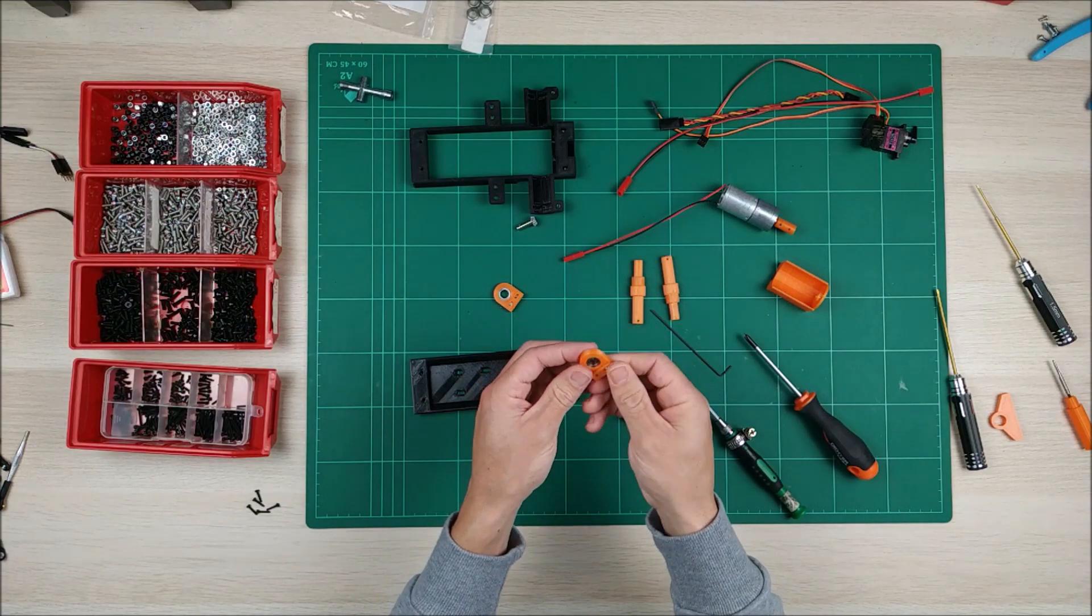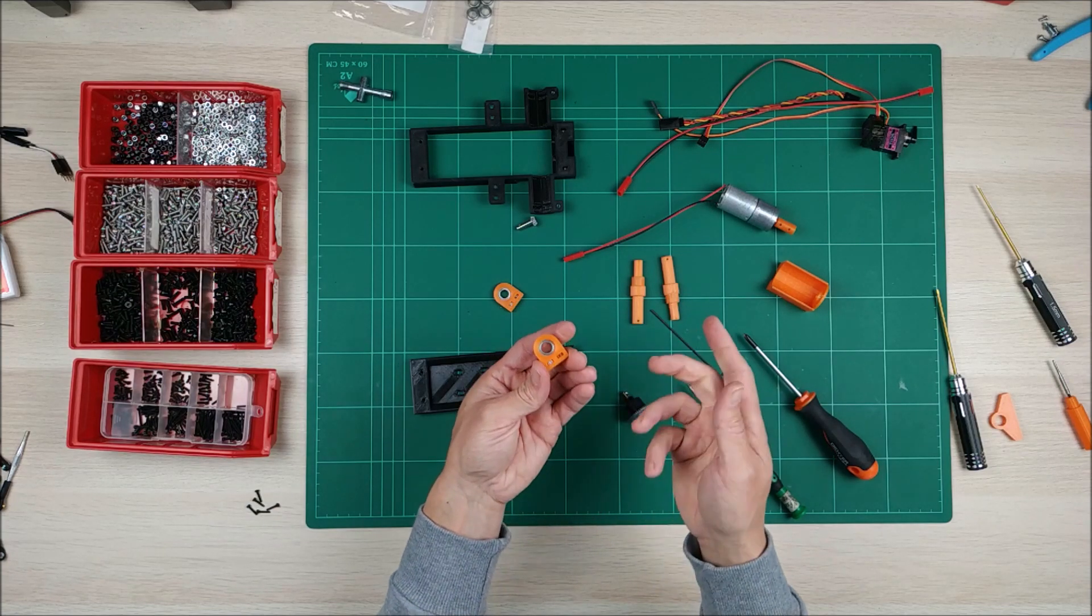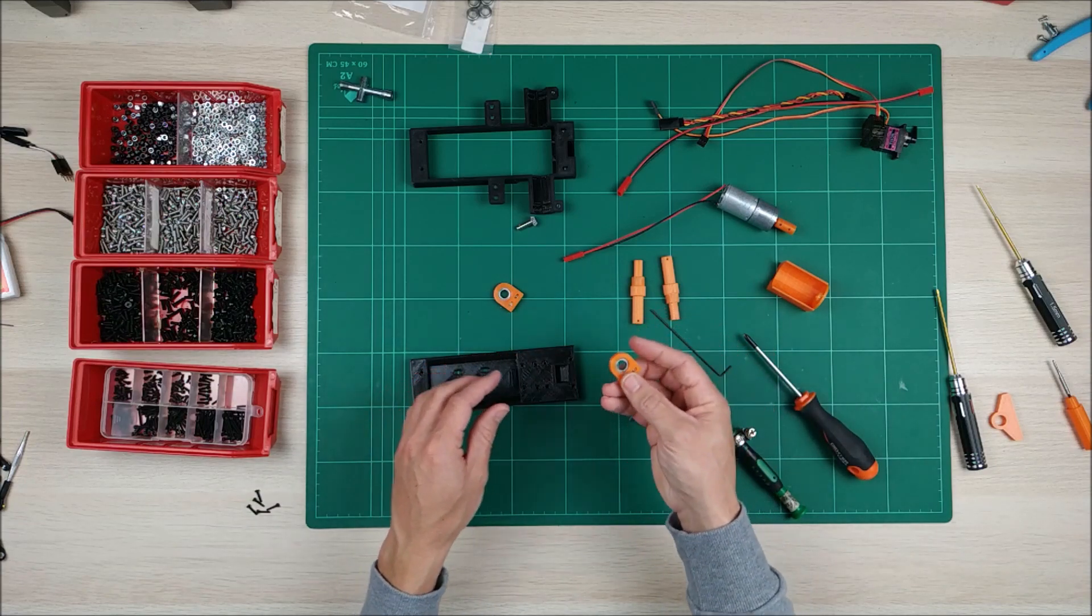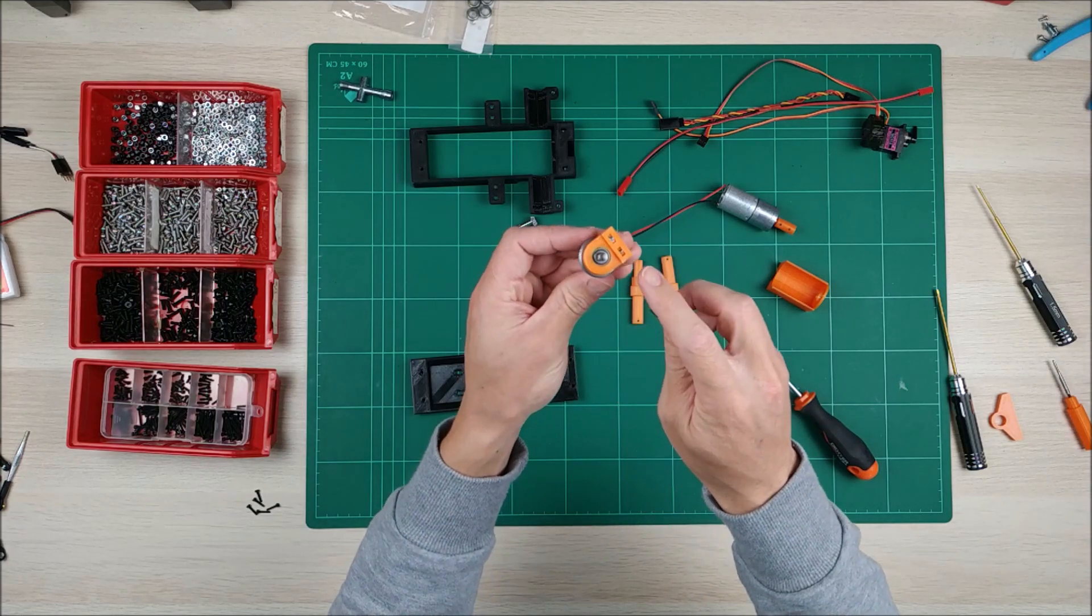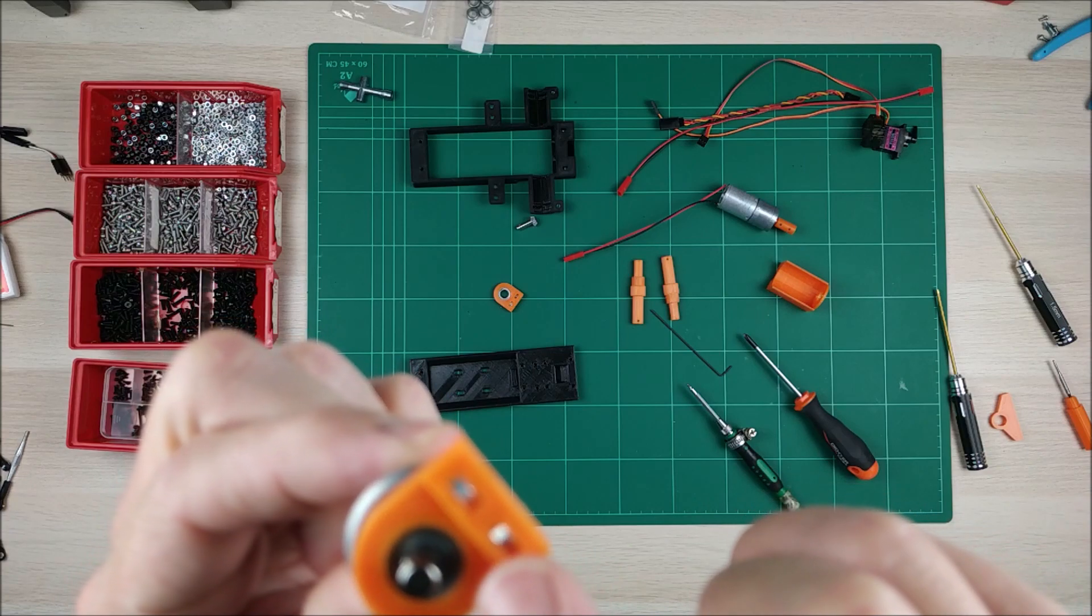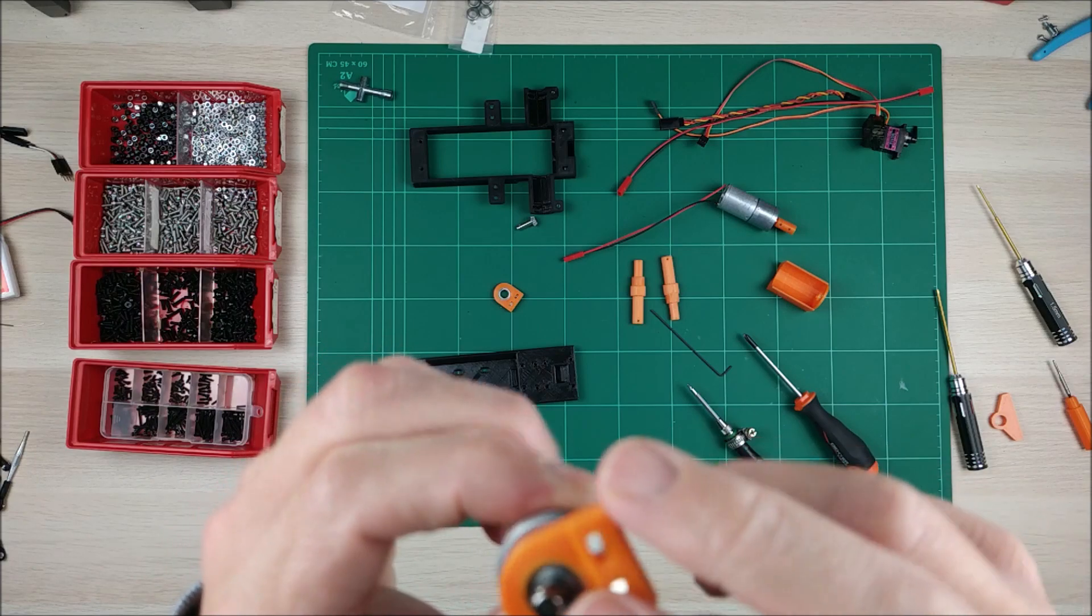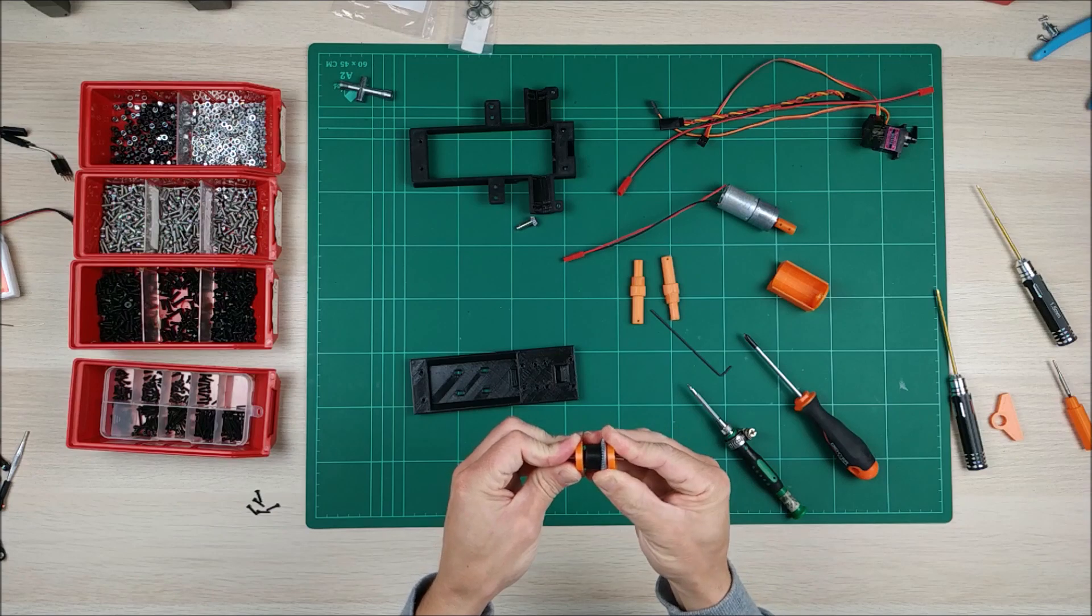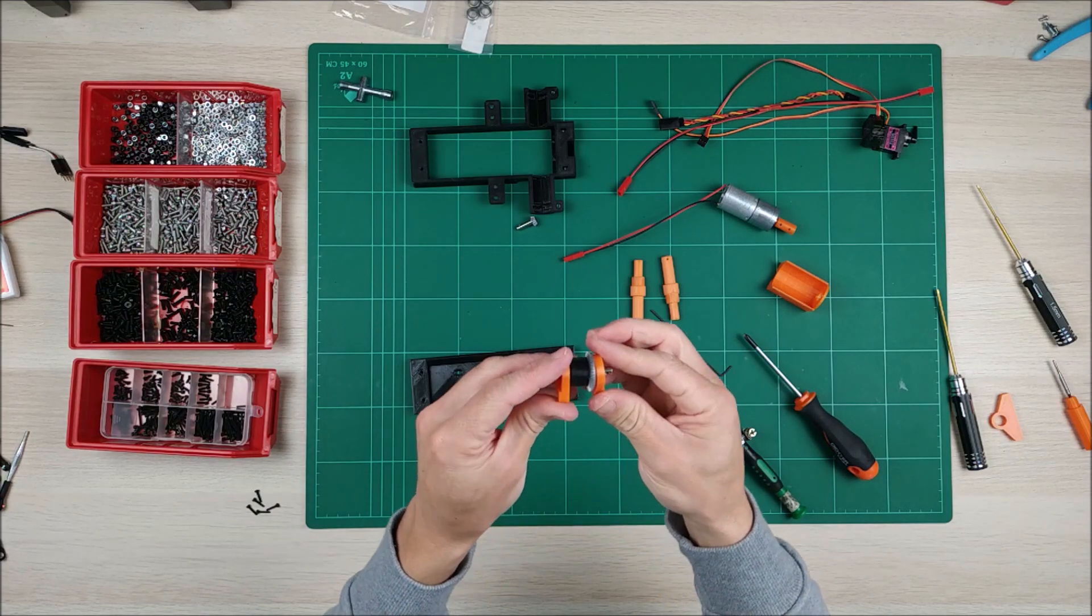You may need some sanding or trimming some of the parts but that depends on your printer. Now that they are ready, we can insert this one here. I think you can see this step or this part that is thicker goes on the outside, and the same here. It's a bit tight but it should work.